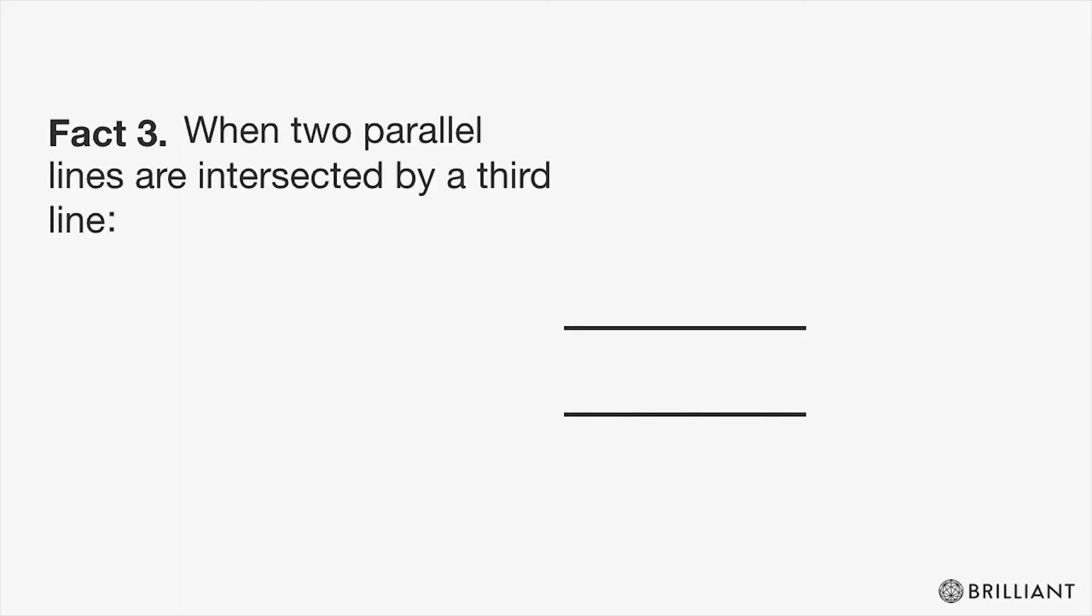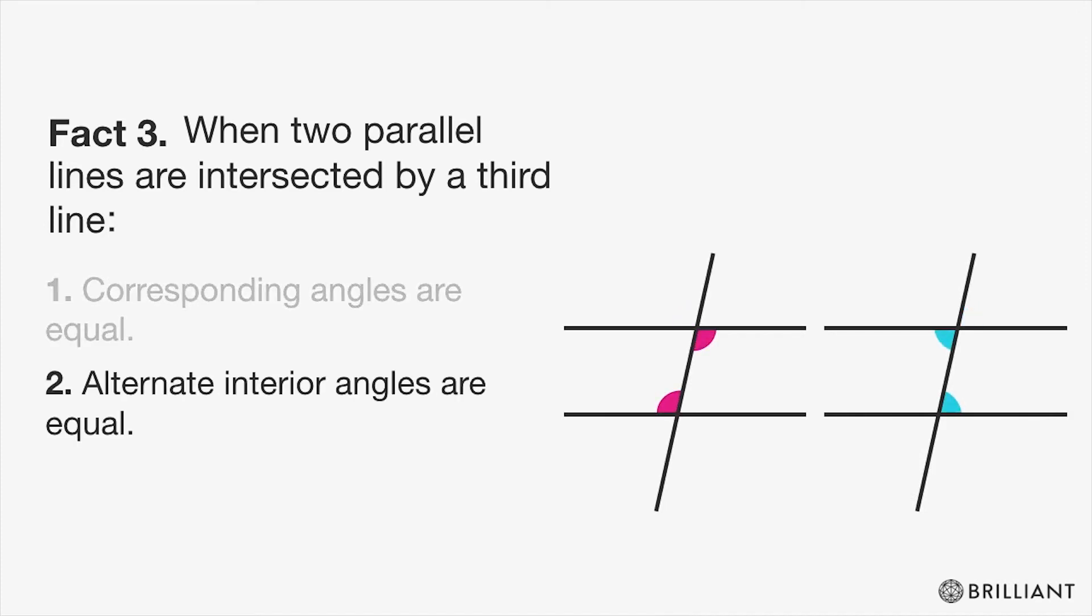Fact 3. When two parallel lines are intersected by a third line, corresponding angles are equal, alternate interior angles are equal, and alternate exterior angles are equal.